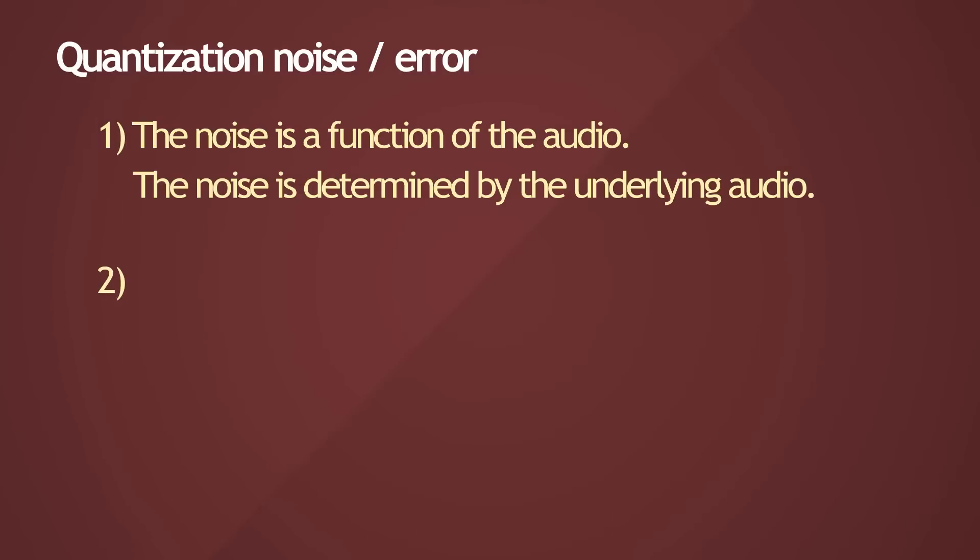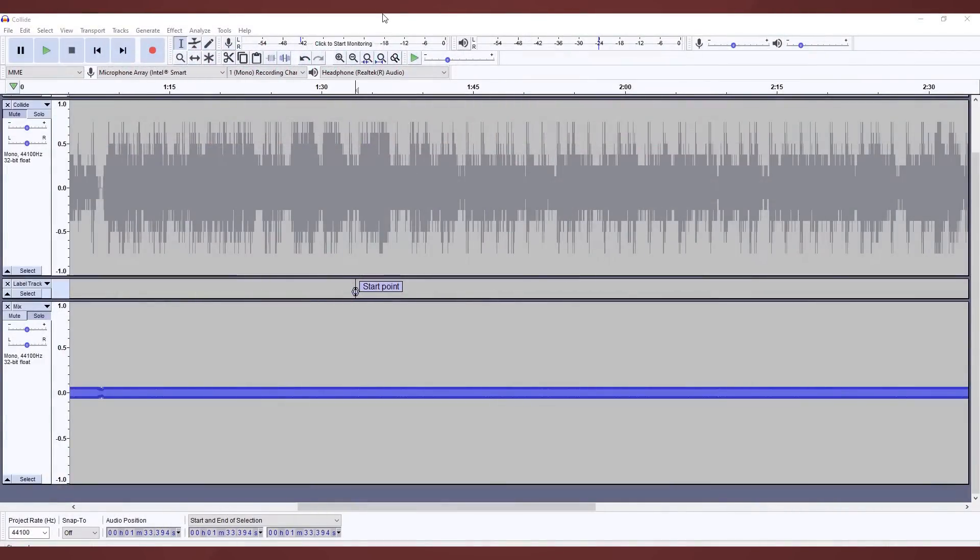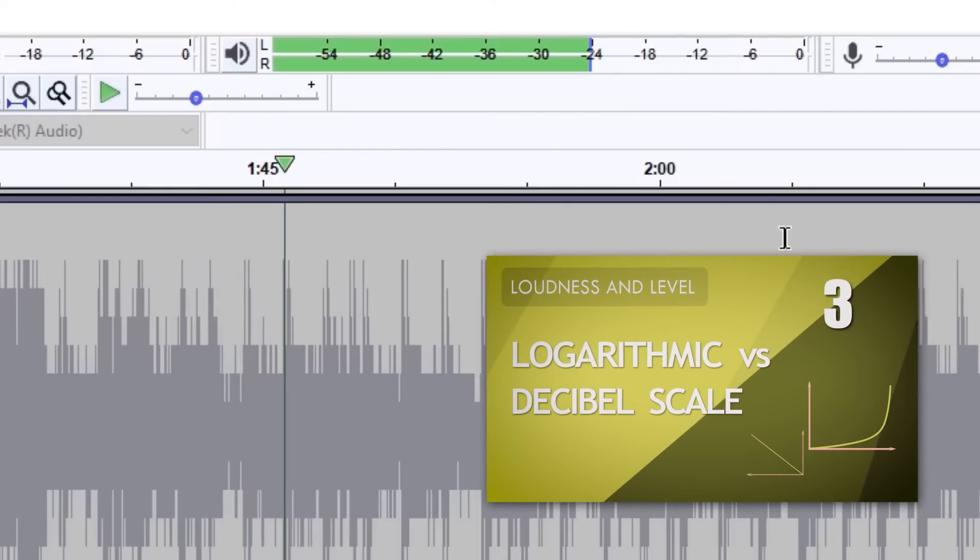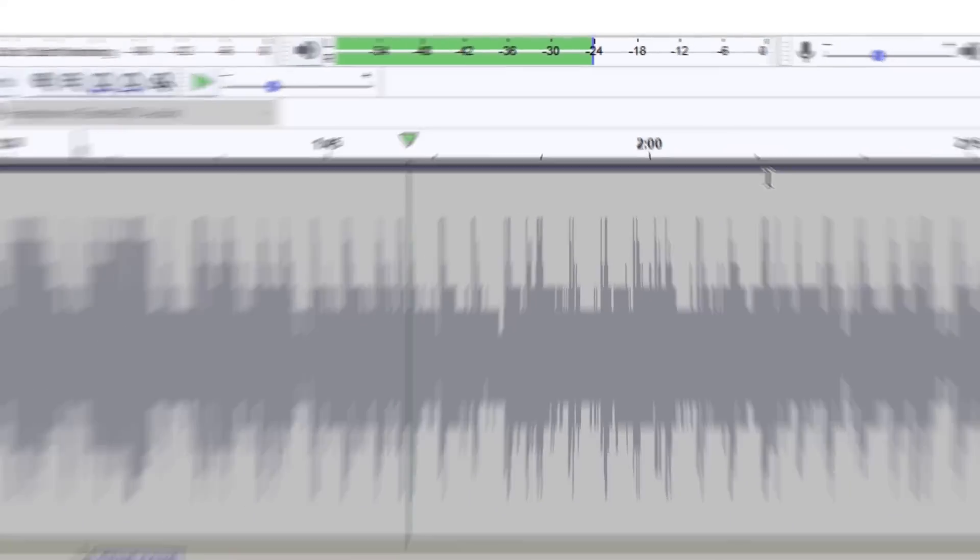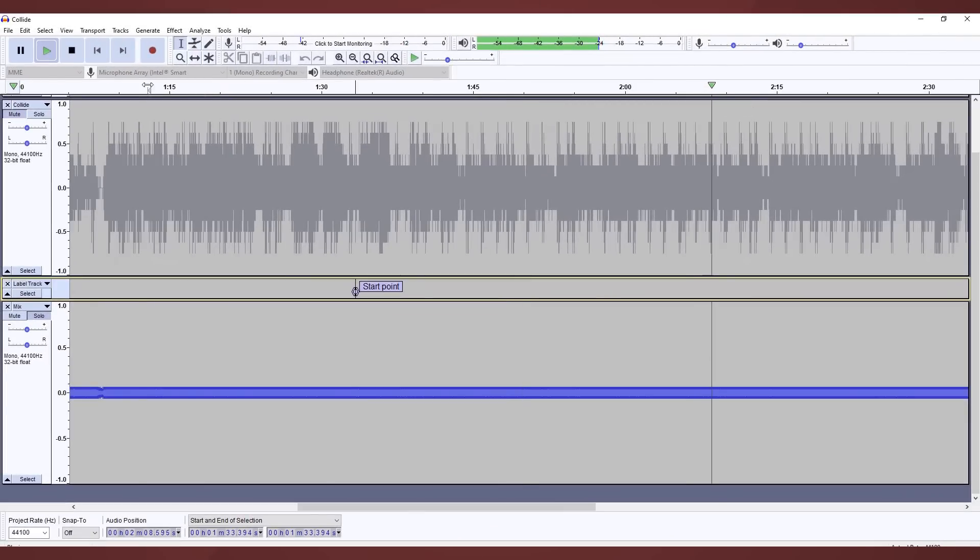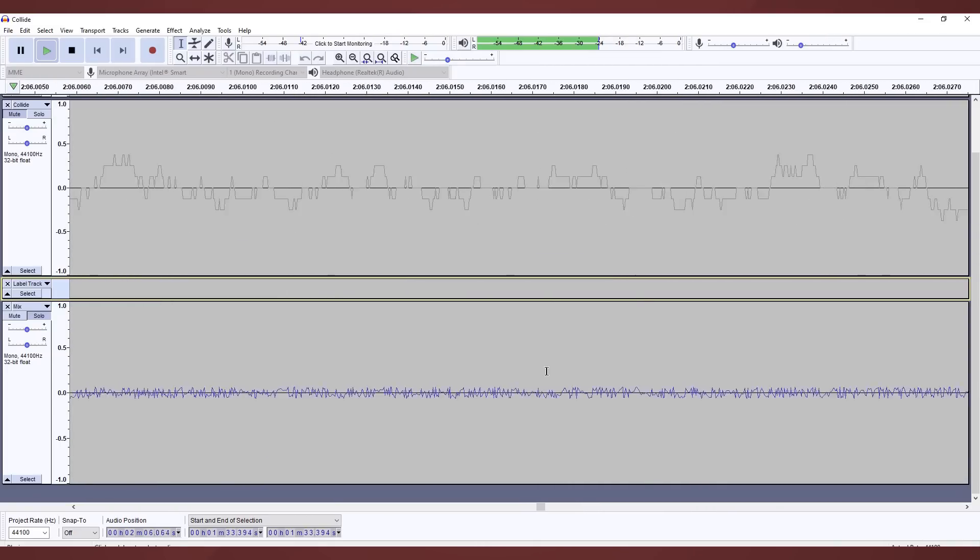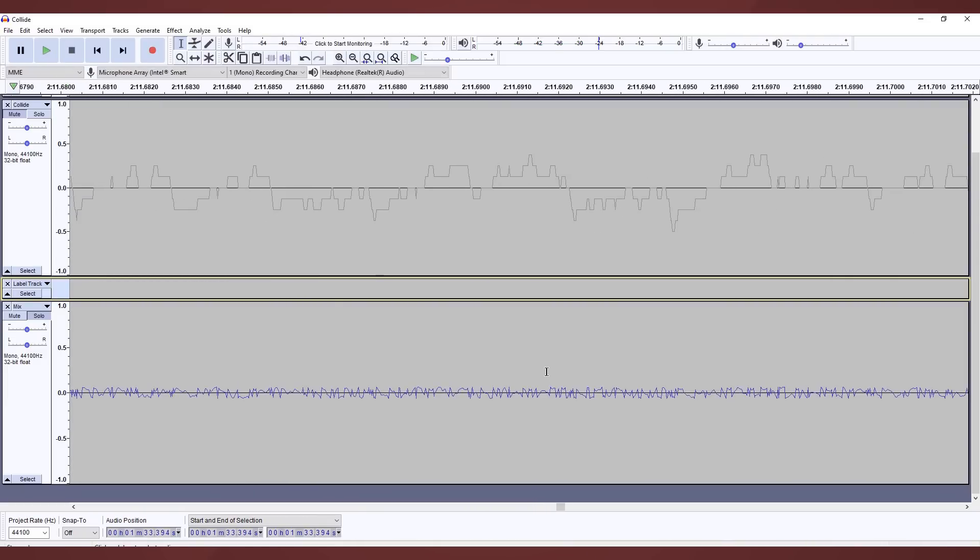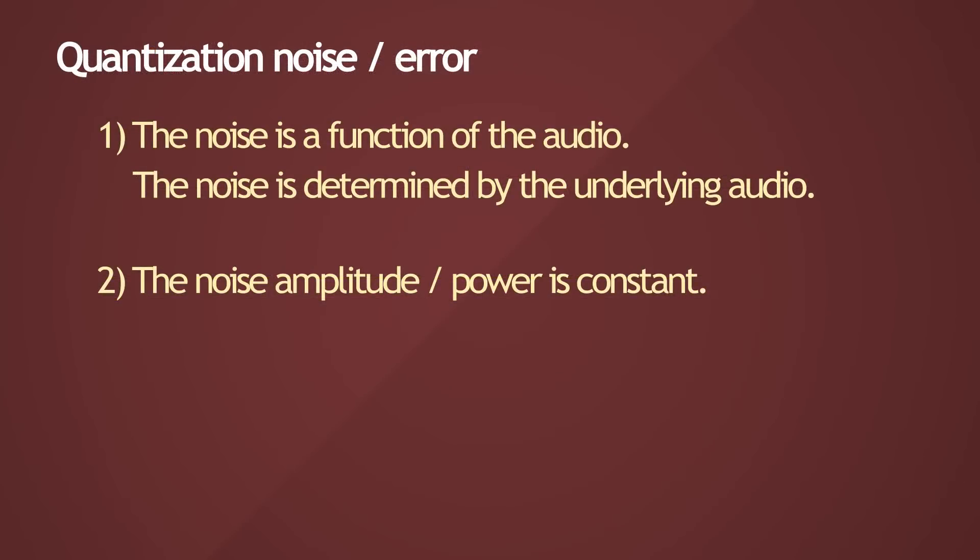The second point to note, strangely enough, is that the noise amplitude is constant. Look at the meters here. The meters read around negative 24 decibels full scale. If you want to learn more about the decibel scale and how audio levels are measured, check out the module on loudness and level. Looking at the level meter here, no matter where I navigate to in the track, the levels read the same. The noise track's waveform itself is squiggly and doesn't suggest any uniformity, and yet the levels are constant. The original track has a decent amount of dynamic range, but the noise associated with a bit depth of 4 is constant.